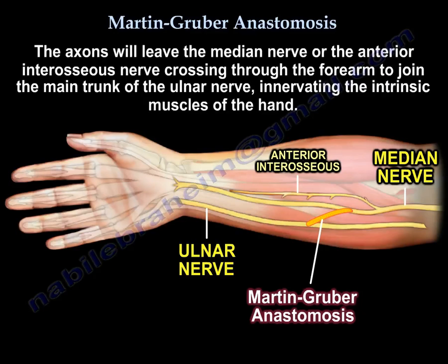The axons will leave the median nerve, or the anterior interosseous nerve, crossing through the forearm to join the main trunk of the ulnar nerve, innervating the intrinsic muscles of the hand.